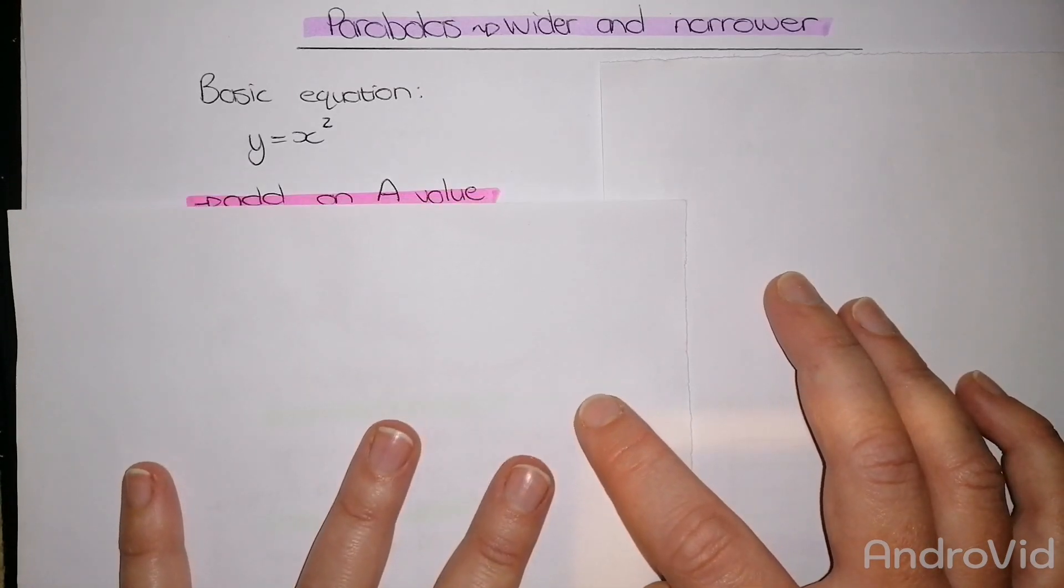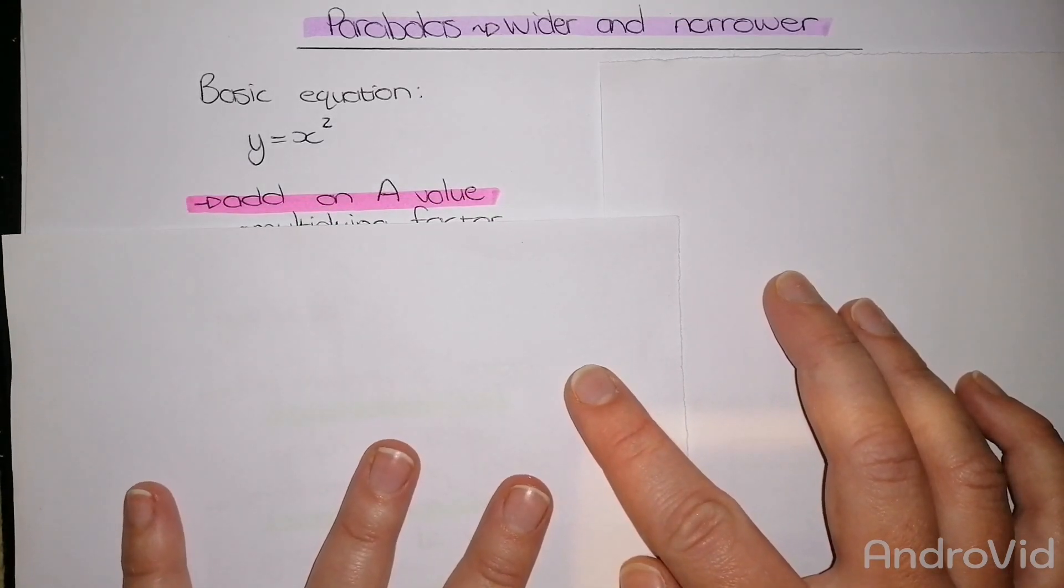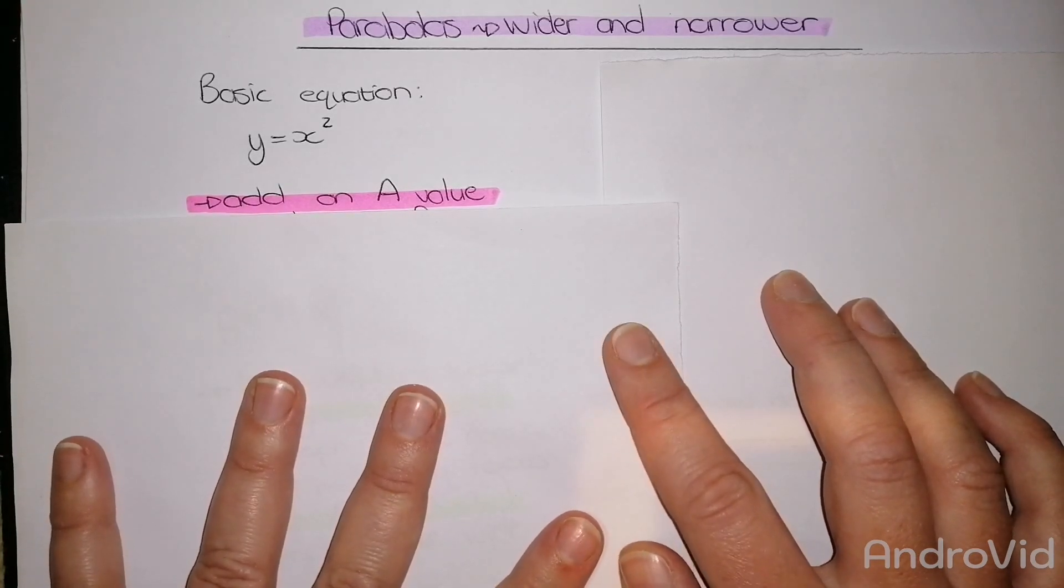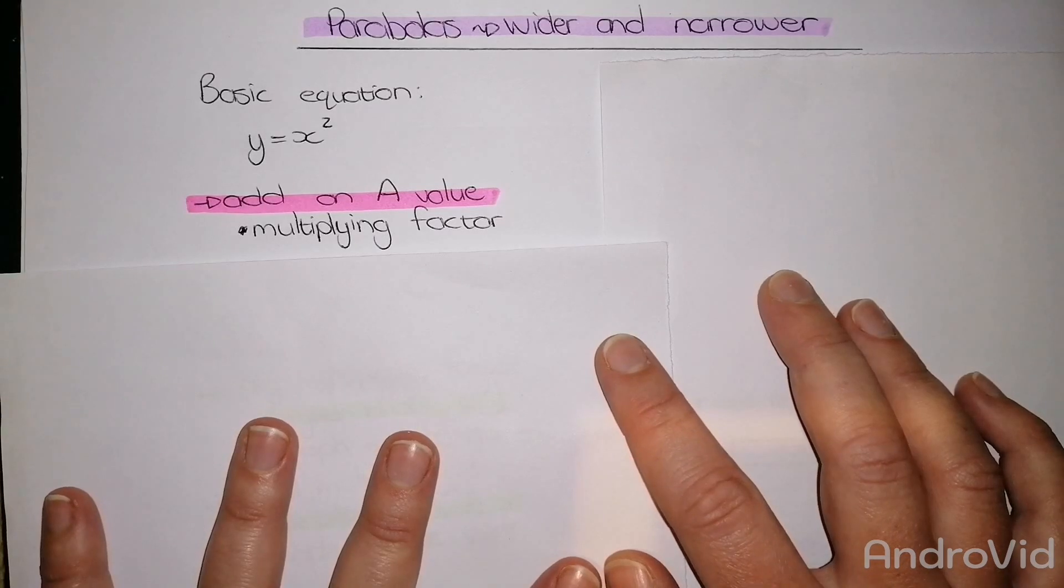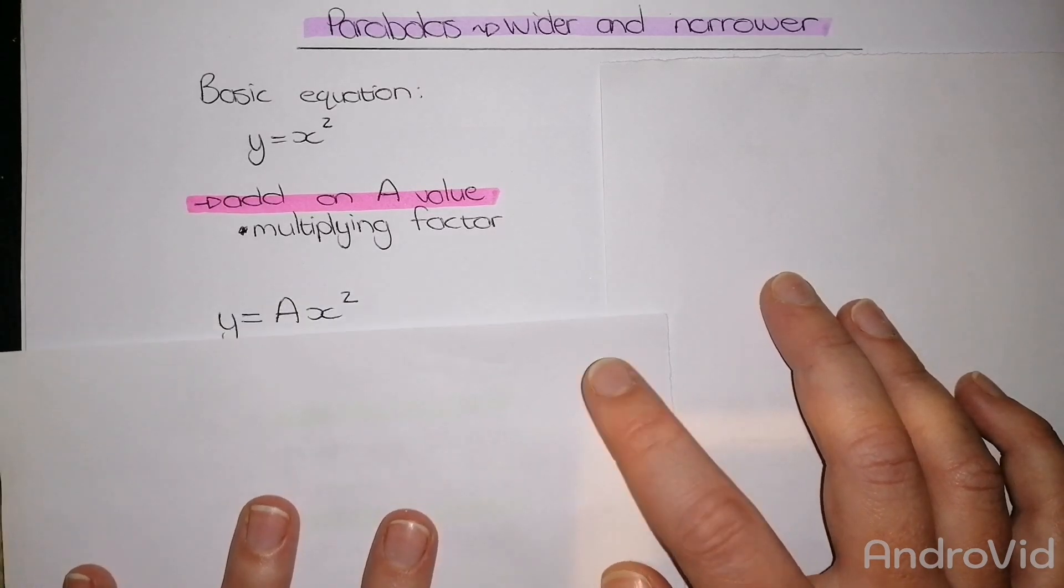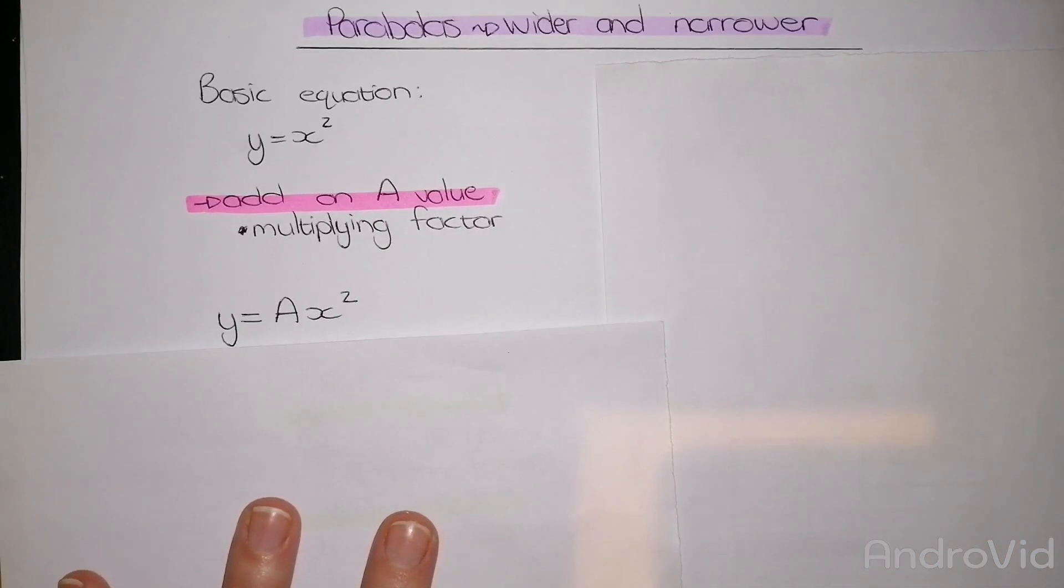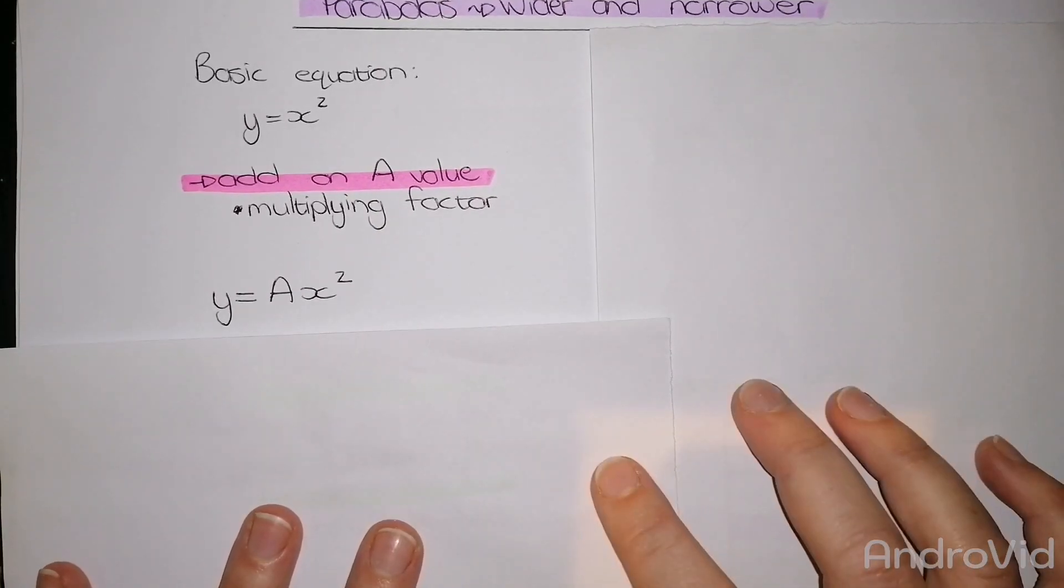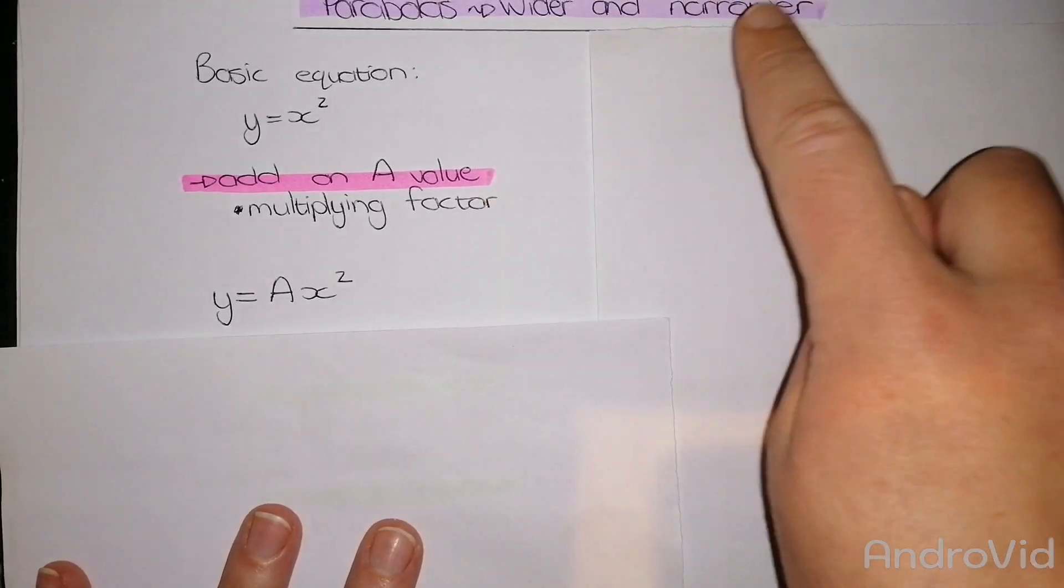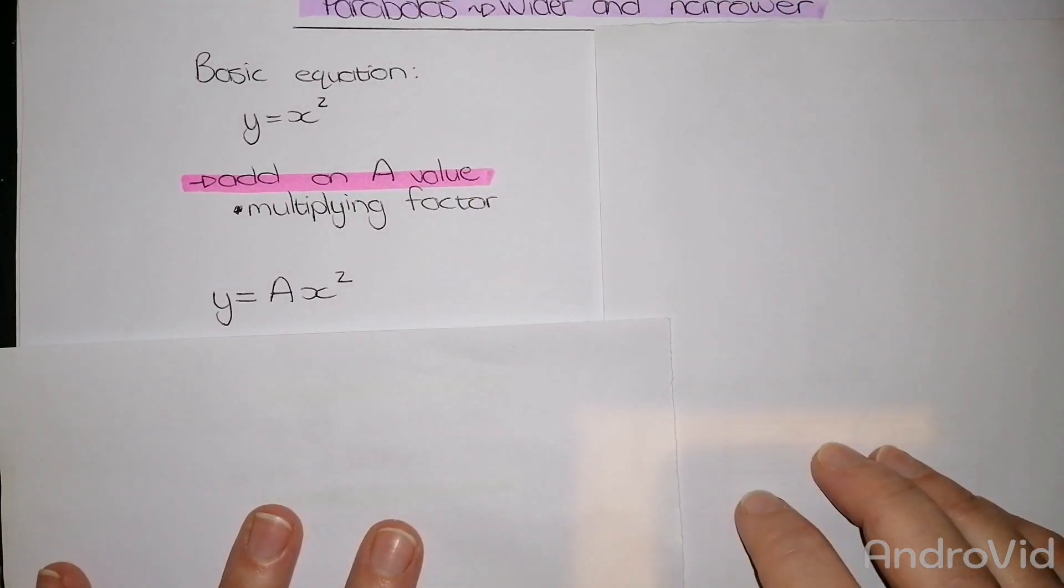First of all, to have a wider or narrower parabola we need to have an a value. The a value is also known as the multiplying factor. This multiplying factor is added in front of my x squared. When we have a multiplying factor, like we said earlier, there's two ways of doing parabolas. It's either going to be wider or narrower.